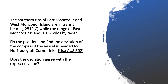So the question here is that the southern tips of East Monocore and West Monocore Islands are in transit. The transit bearing is 251 degrees compass — note that this is a compass bearing, not a true bearing. While the range of East Monocore Island is 1.5 miles by radar, you have to fix the vessel's position first, and then find the deviation of the compass if the vessel is headed for Number One Buoy of the Corner Inlet.